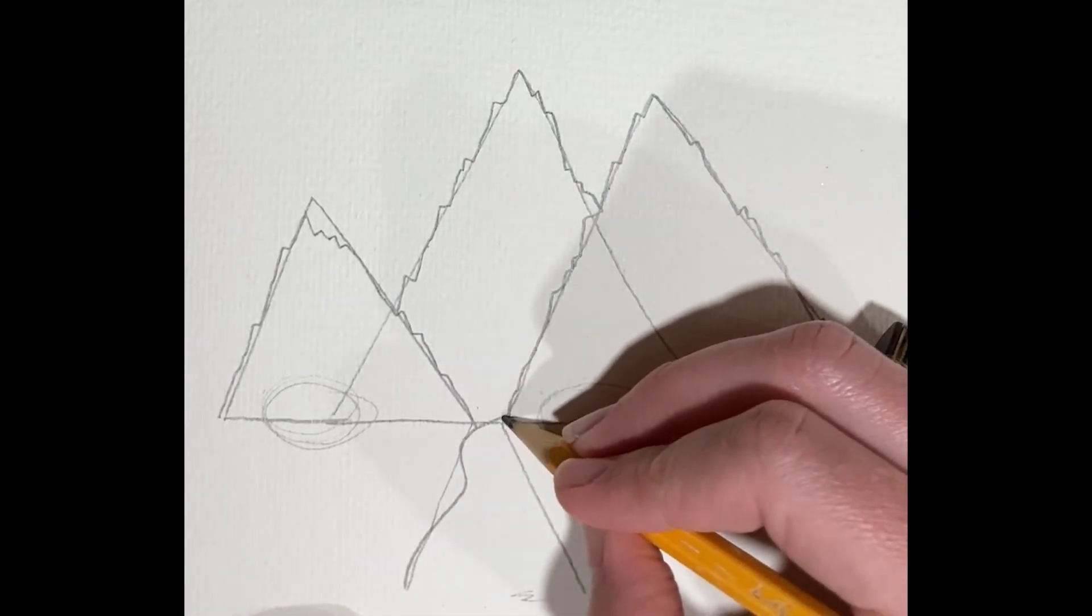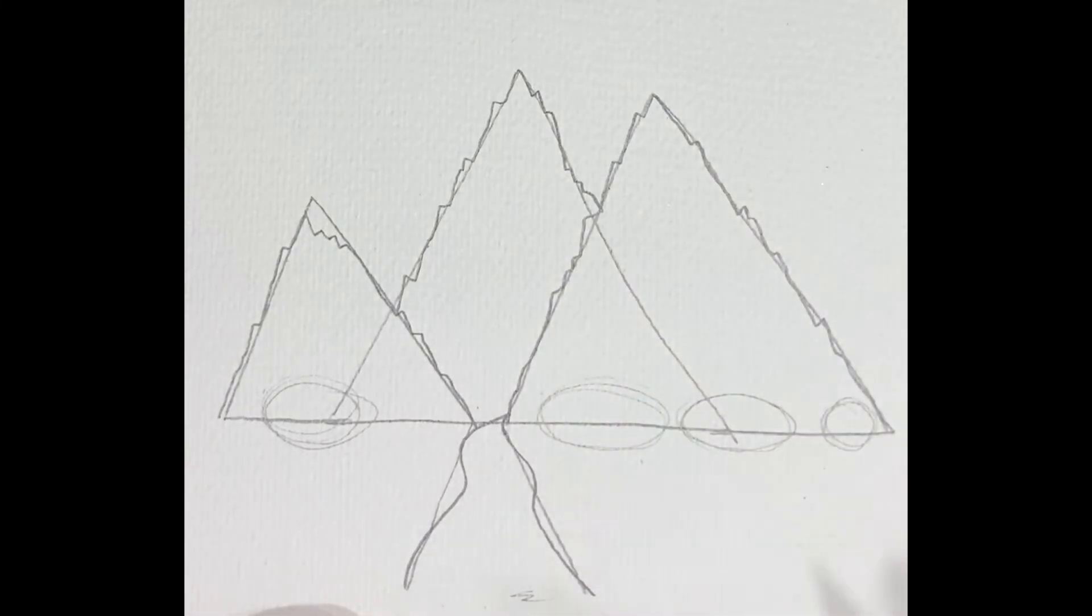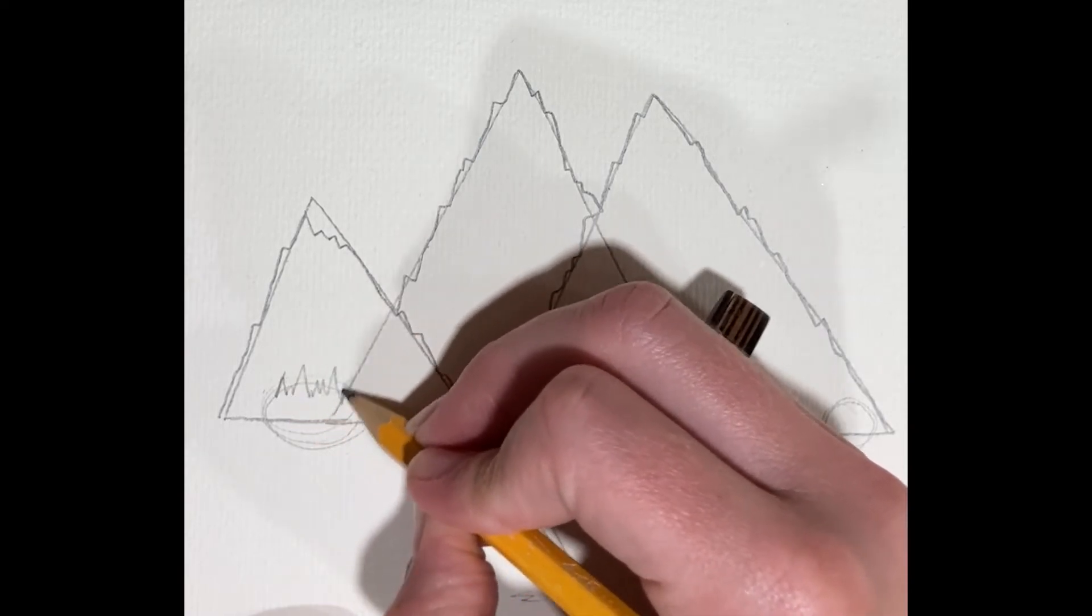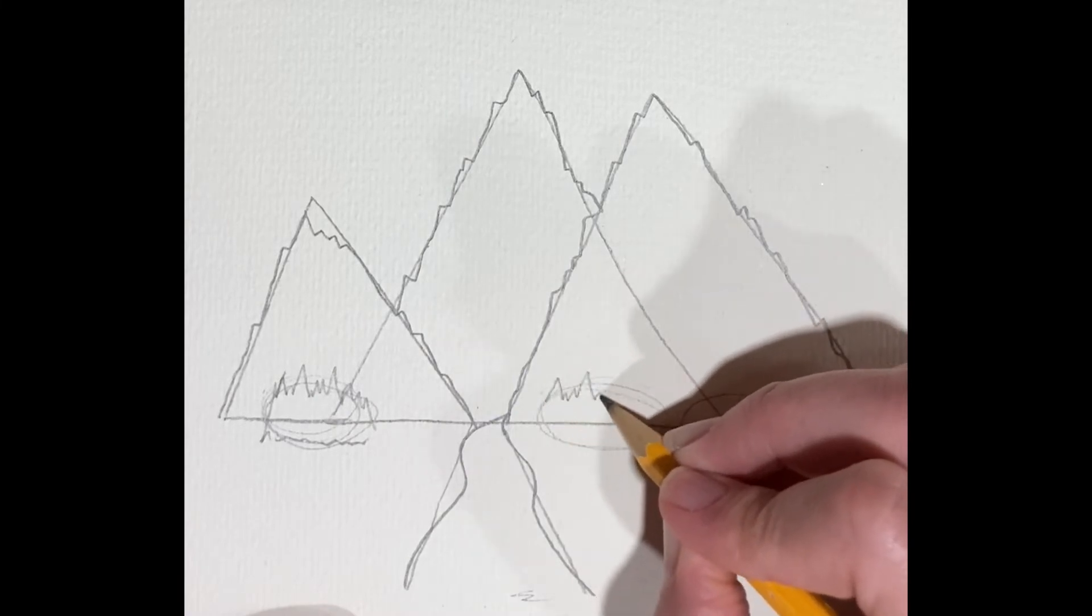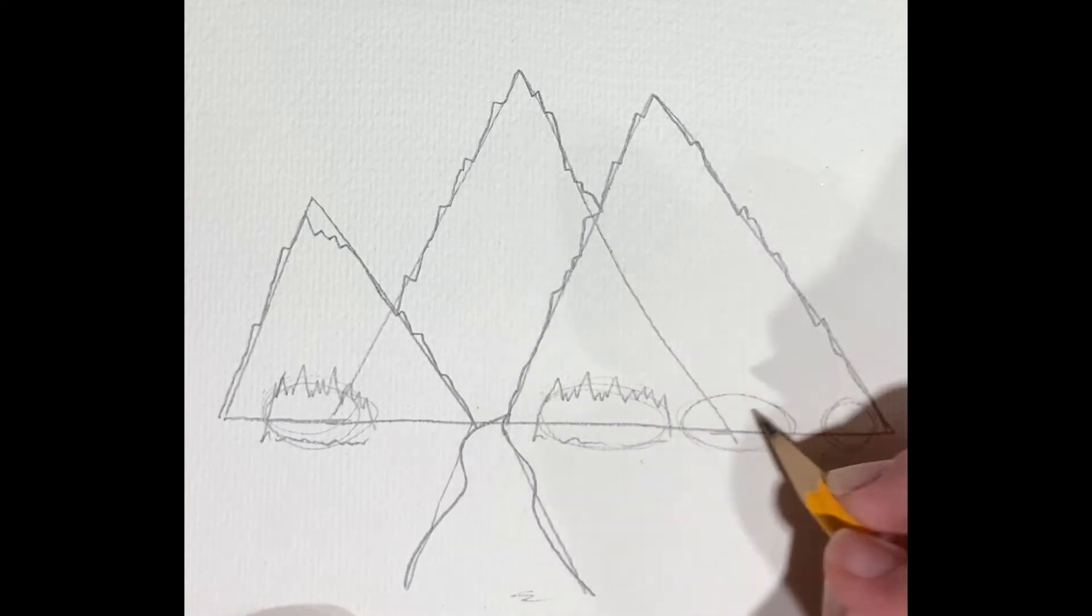Okay, and now those lines coming towards us, I'm just curving them so it looks more like a river. And for our trees, these are really far away so we're not going to see all the individual trees, but they're pine trees so we're gonna make them kind of spiky, and they're different heights.